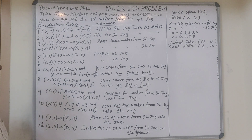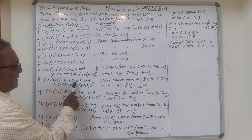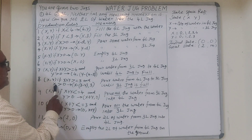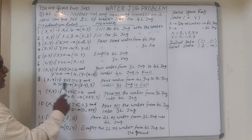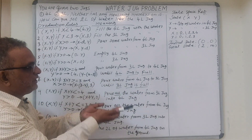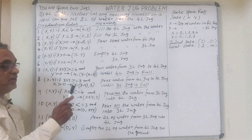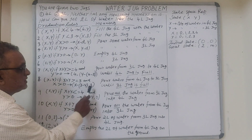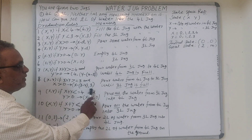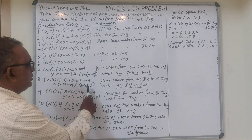Rule 8: X comma Y — if X plus Y is greater than or equal to 3 and X is greater than 0, it implies pour water from the 4-litre jug into the 3-litre jug until the 3-litre jug is full. As a result, the 3-litre jug should be full — Y should take the value 3.